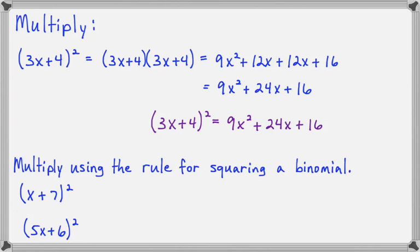First times first will be x squared. The middle term will be x times 7, which is 7x, times 2. 7x times 2 is 14x. Last times last will be 7 times 7, which is 49.